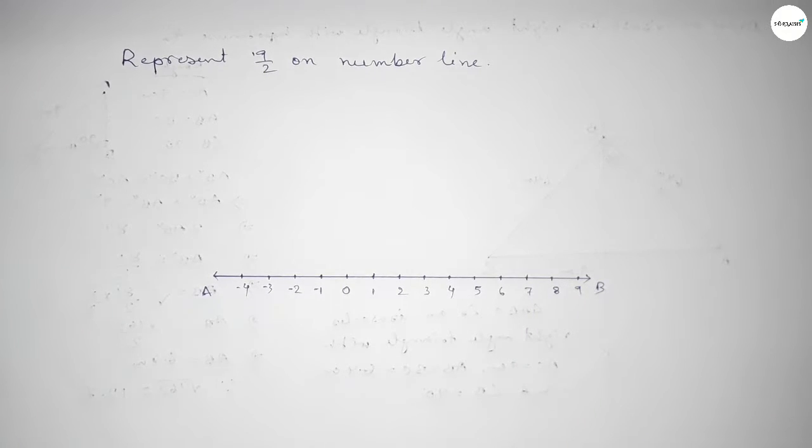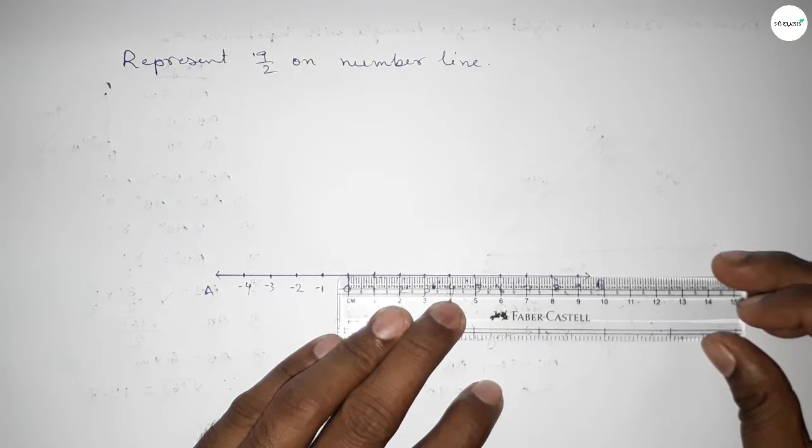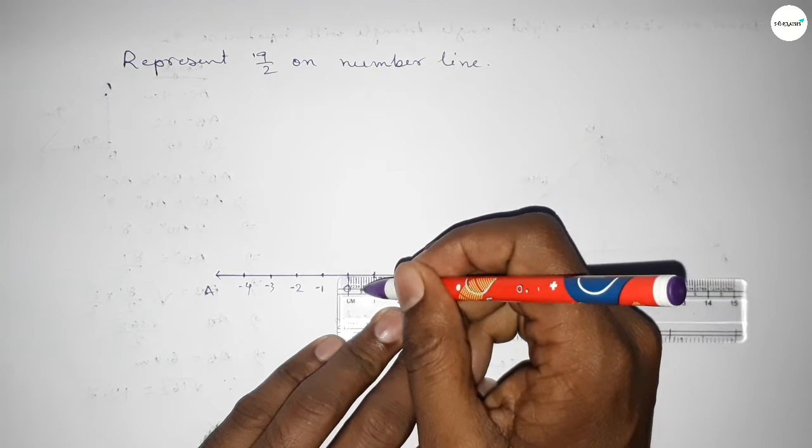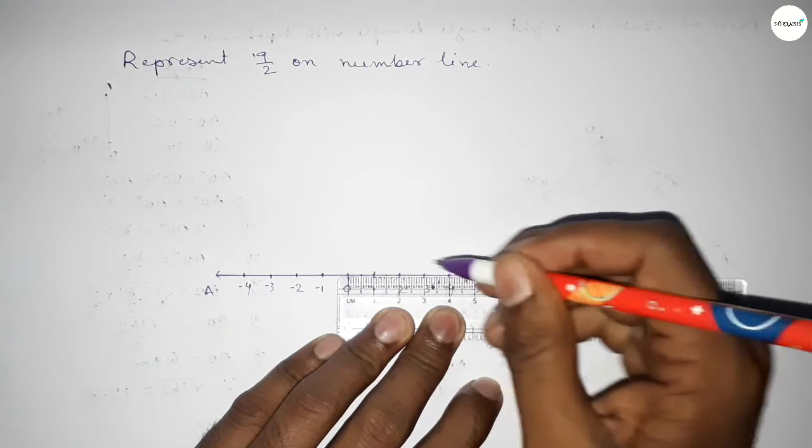Now we have to divide the distance between 0 to 1, 1 to 2, 2 to 3, 3 to 4 by 2. So first taking the half between 0 and 1, so this is half, this is half between 1 to 2.